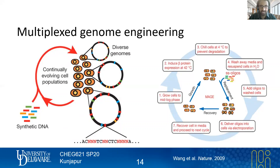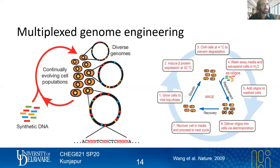The Lambda Red system had been used for recombineering for a long time, particularly with double-stranded DNA cassettes. Around 2009, there was a report from George Church's lab at Harvard that you could use synthetic DNA in the form of short oligonucleotides — short meaning it works well at about 90 base pairs, but potentially as short as 60.